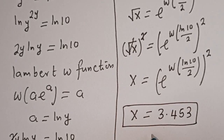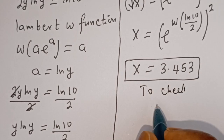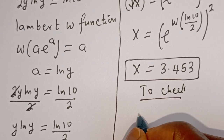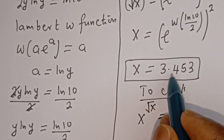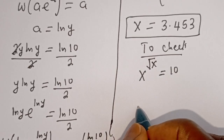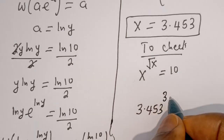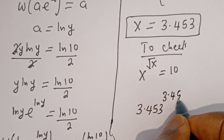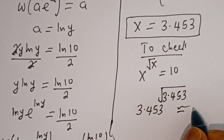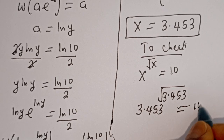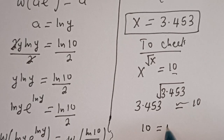We can check to confirm if this answer is right. To check, we have the given equation S to the power of square root of S is equal to 10. When S is equal to 3.453, we get 3.453 to the power of square root of 3.453, which equals 10 — the right-hand side — which is true.